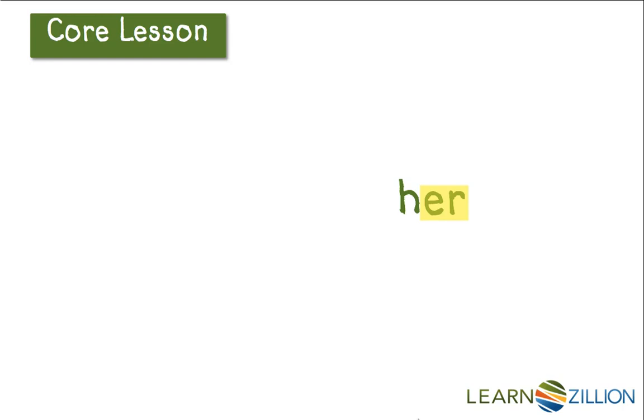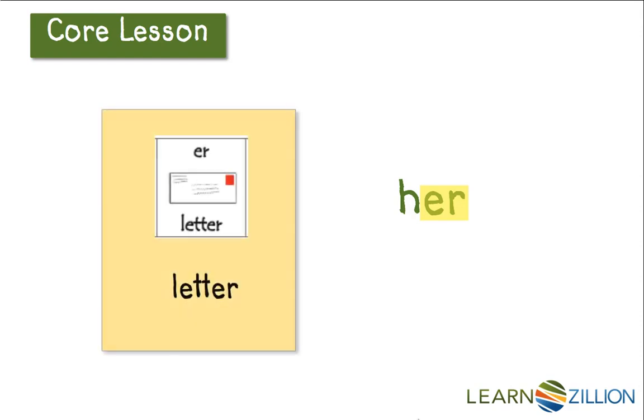So, let's see. First, I'm going to look at this word from left to right. I notice that the word starts with an H. Then it has a syllable ER, and I remember that the ER makes the ER sound like in letter. So, I know the H makes the H sound, and I remember that ER makes the ER sound. I can read this word by blending those two sounds together. H-er. Her. This word is her.